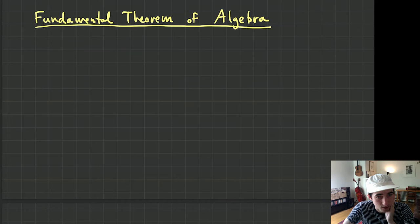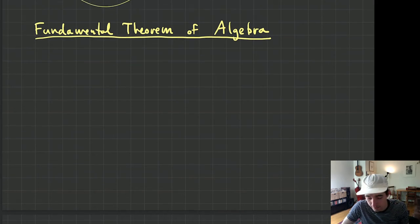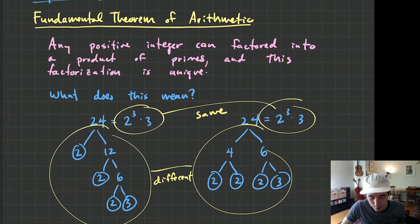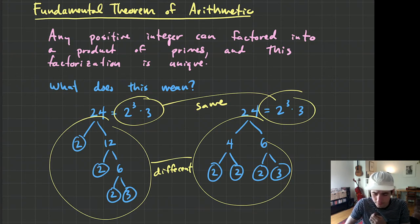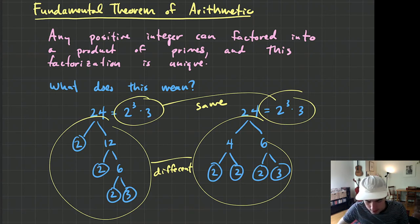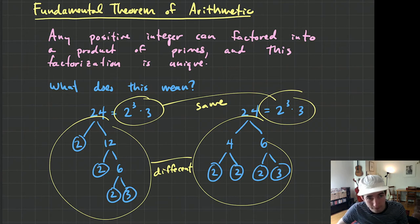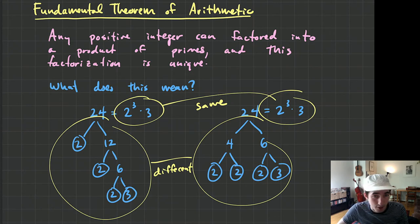I think these are really important theorems to be aware of. The Fundamental Theorem of Arithmetic is possibly one of the most important just to know — that all numbers can be factored and that factorization is unique. You can't factor a number in two different ways; there's only one way to factor a number.